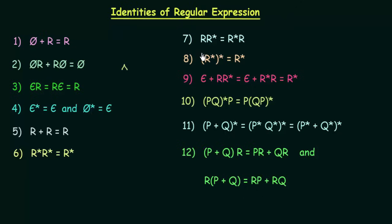The seventh identity says r·r* = r*·r. This basically means you can write it either way — the concatenation of r and its closure equals the closure of r concatenated with r. The eighth identity says (r*)* = r*. If you have the closure of a regular expression and perform the closure of it again, you get the closure of the regular expression itself.